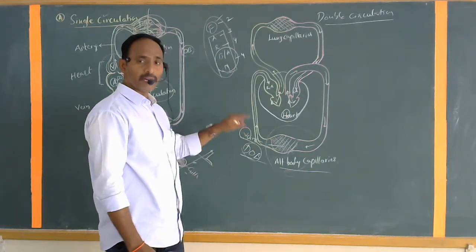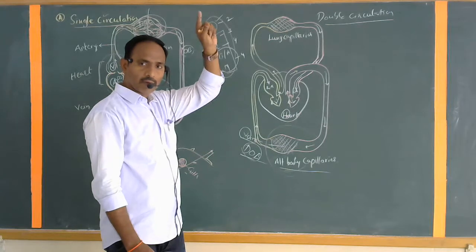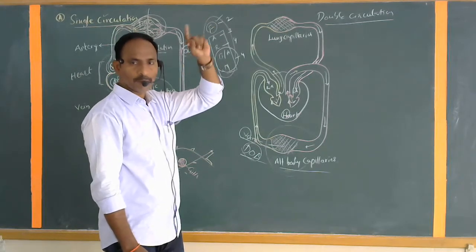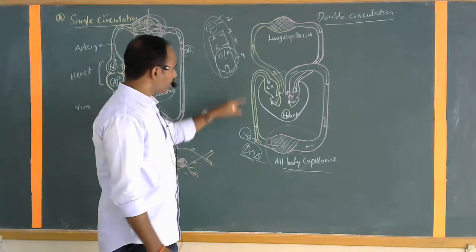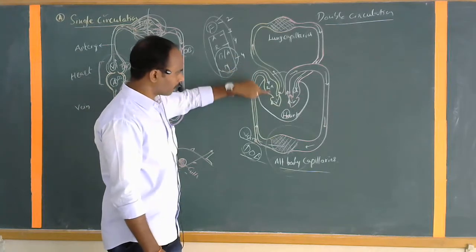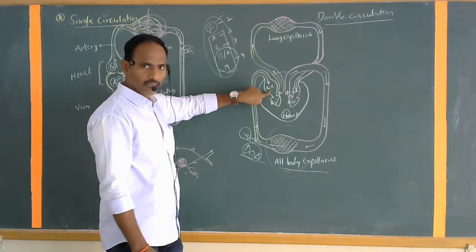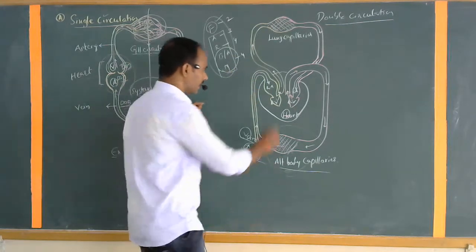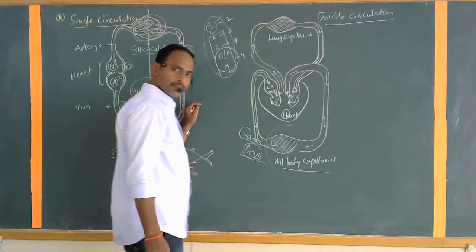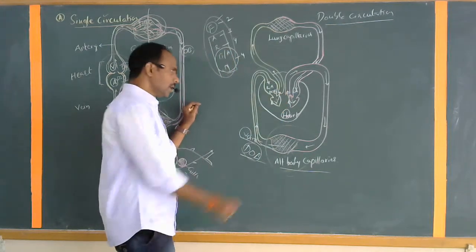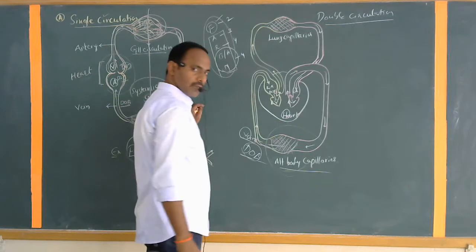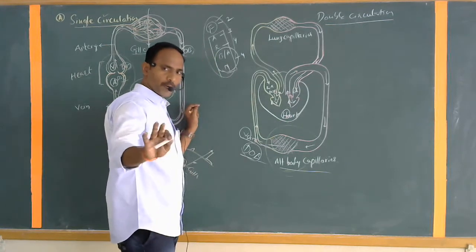The veins are basically two categories: superior venacava and inferior venacava. Both superior venacava and inferior venacava directly open into the right atrium — the right auricle — which receives the deoxygenated blood. That same deoxygenated blood passes into the right ventricle via valves.